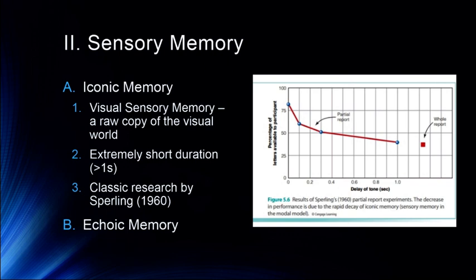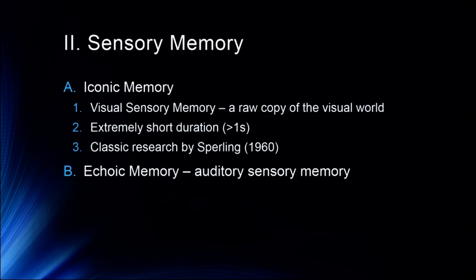So that's iconic memory — visual sensory memory. There's also echoic memory, which is sound-based sensory memory. It works similarly — you can direct your attention within it. If you remember when we talked about pre-attentive processing, when you're trying to listen to one voice versus another, that's all happening probably in echoic memory as you're directing your attention. That's our auditory sensory memory, and again it has some uses for things like translators.